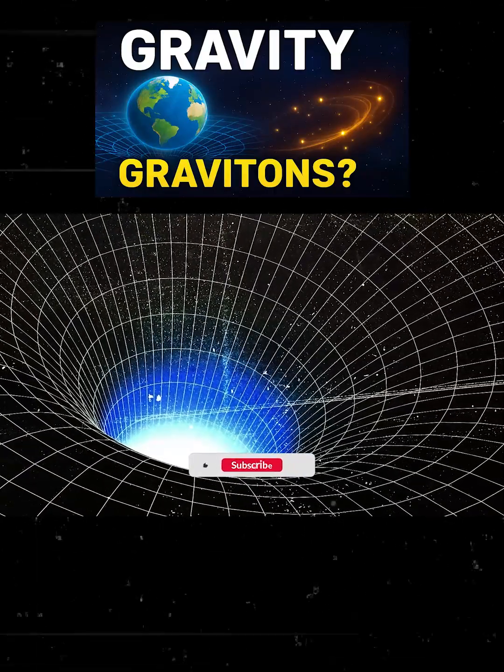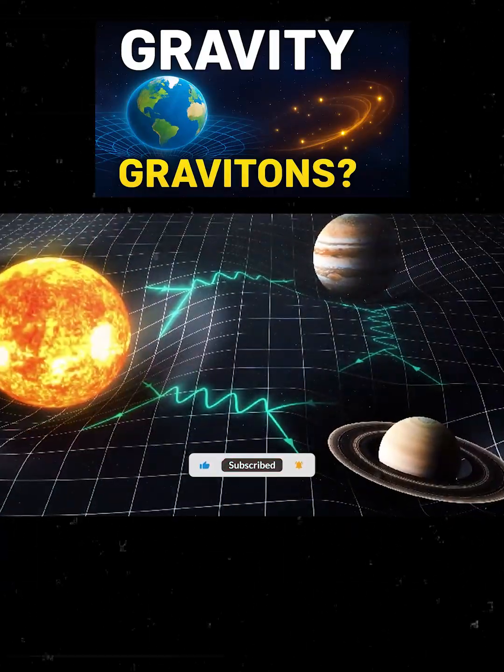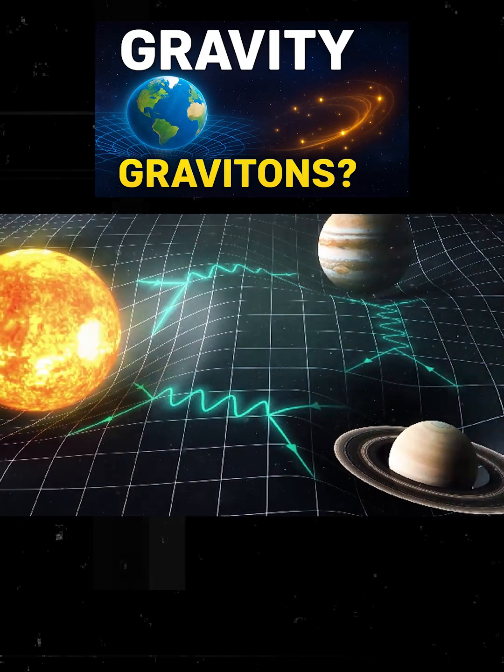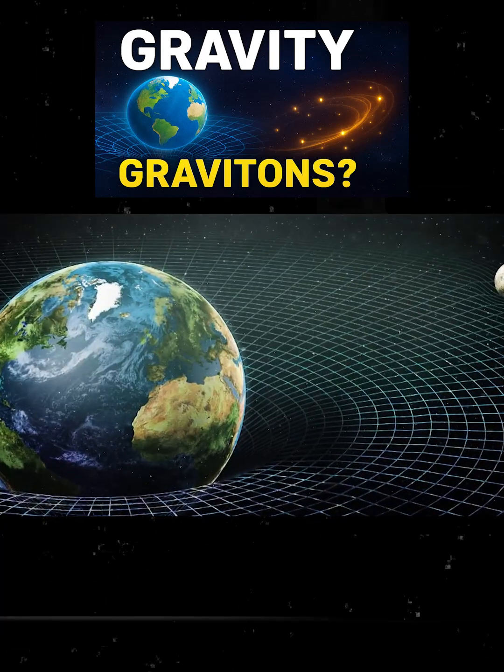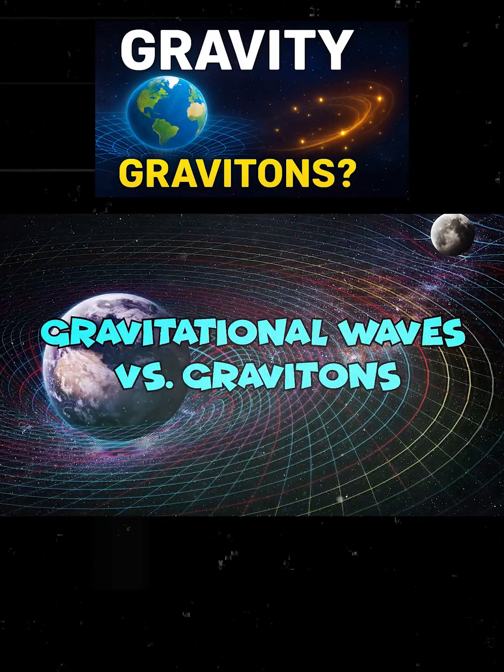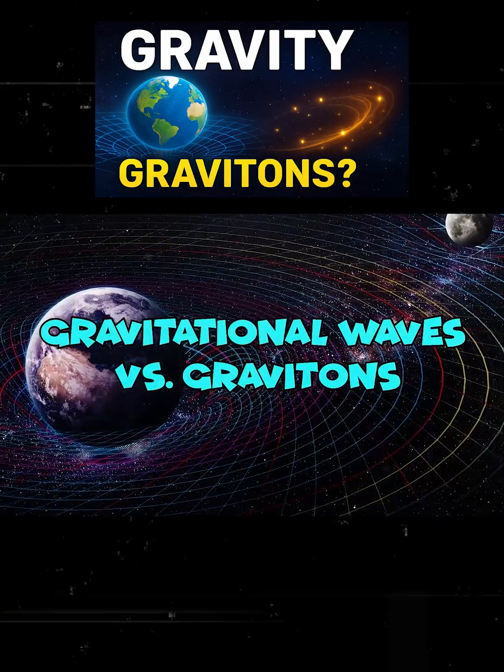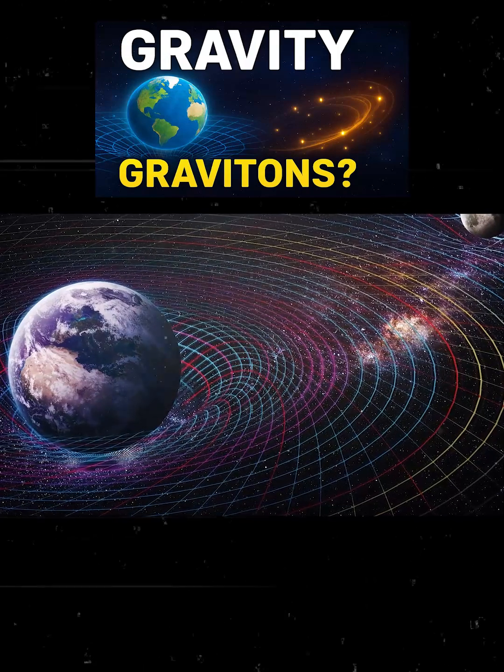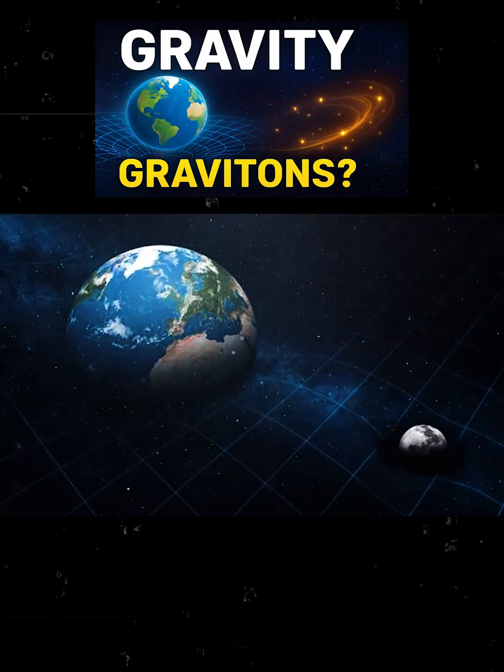Gravitational waves versus gravitons. In 2015, scientists detected gravitational waves, ripples in space-time caused by colliding black holes. This proved Einstein right. But waves are not particles. Detecting a single graviton remains far harder.